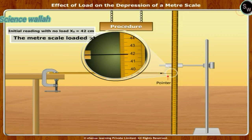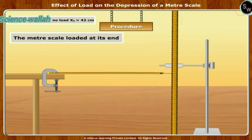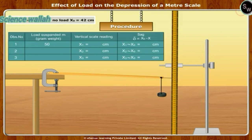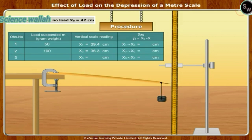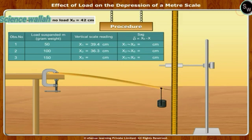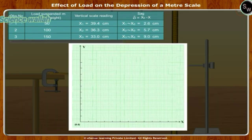Note the initial reading on the vertical scale corresponding to the tip of the pointer when no weights are suspended. Suspend a hanger with slotted weights at the free end of the meter scale and note the corresponding reading on the vertical scale. Take three sets of observations.